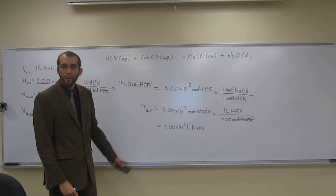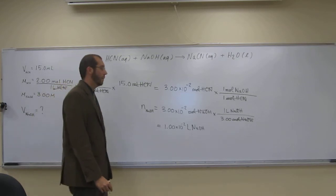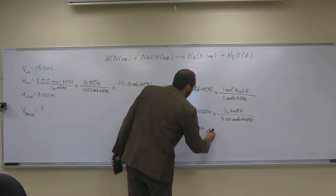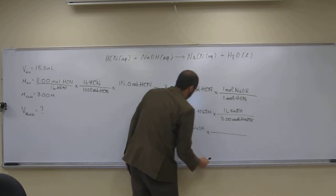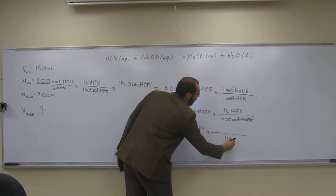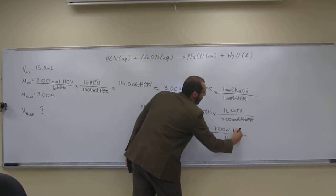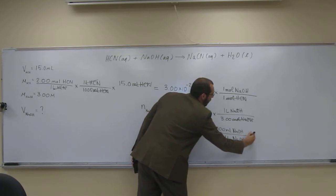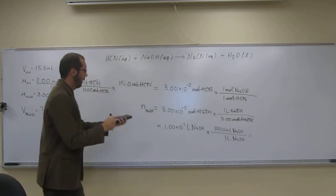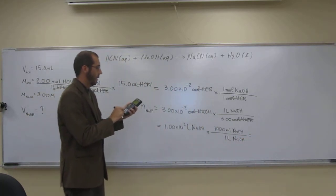But do we want to keep it in liters? Let's change it back to milliliters. So what do we want to do? For every 1 liter, 1,000 milliliters. So all we have to do is multiply that by 1,000.